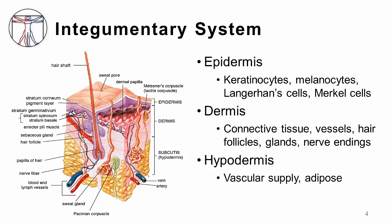Briefly, the epidermis is the outermost avascular layer of skin that contains mostly keratinocytes, which are keratin-filled epithelial cells, but also contains pigment-producing melanocytes, immunologic Langerhans cells, and neuroendocrine Merkel cells. The dermis lies below the epidermis and contains many structures including connective tissue, vessels, hair follicles, sweat and sebaceous glands, and nerve endings called mechanoreceptors that enable sensation.